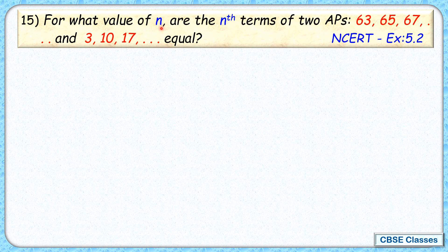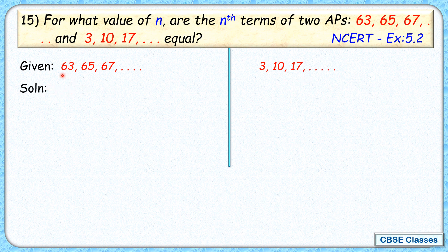Let's check the solution. We'll start with what is given to us - two APs are there. For the first AP, the first term a is 63 and the common difference d is 2.